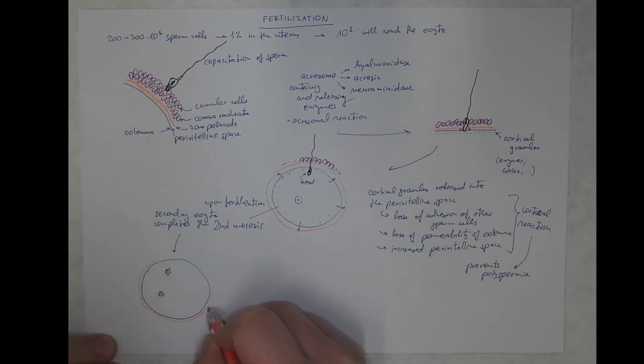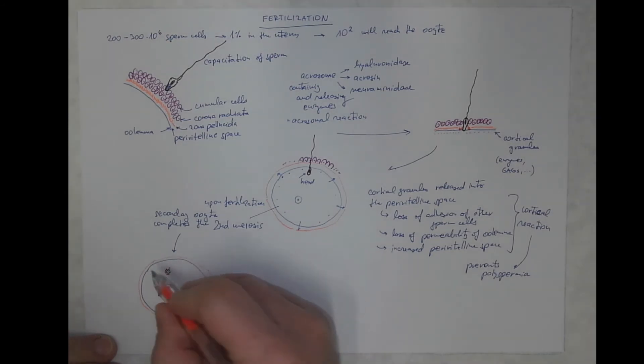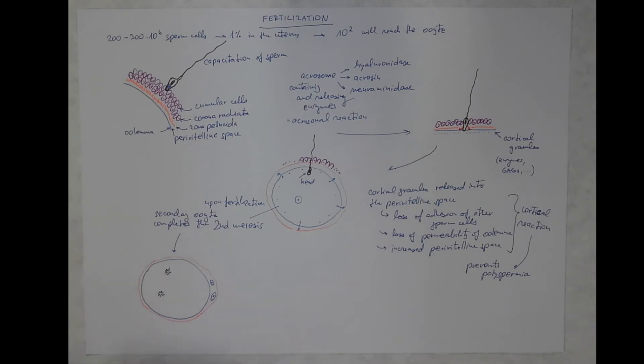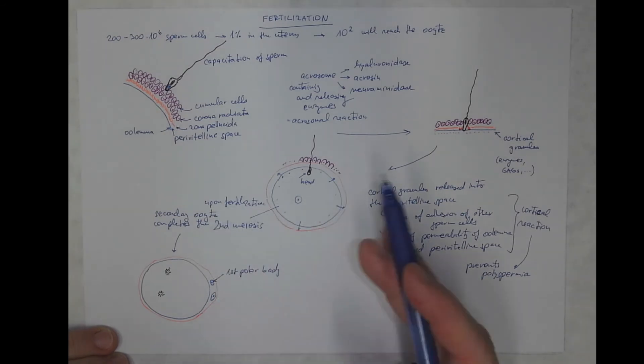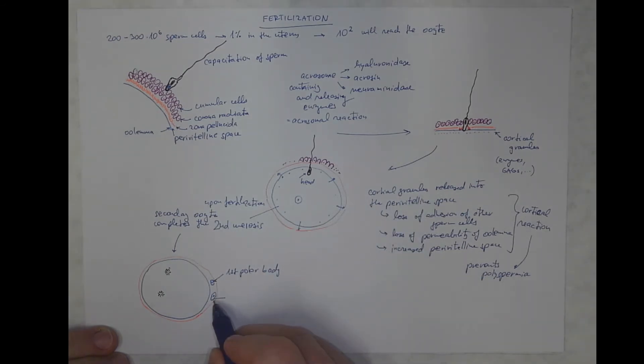But here, as the outcome of the second meiotic division, we will see the second polar body. Yes, there might be also the first polar body surviving from the completion of the first meiotic division. Perhaps I should have included into the previous schemes, but it was not a point. But now, a newly appearing second polar body.